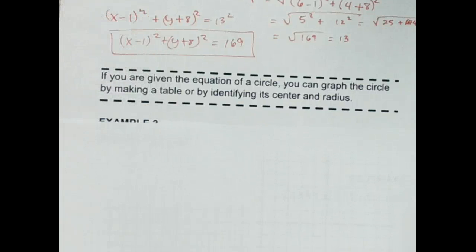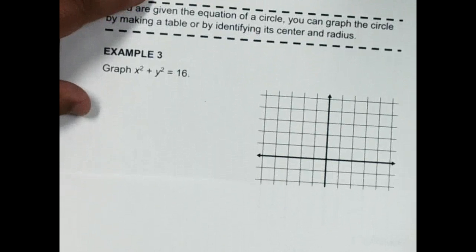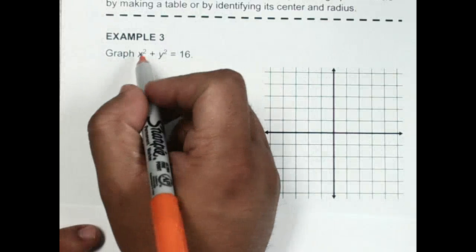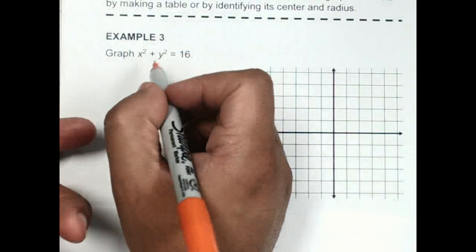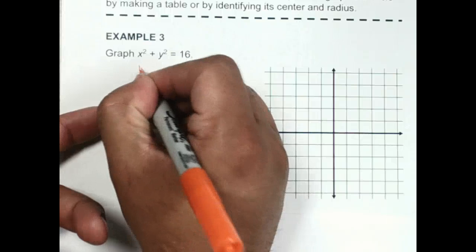Now, if you're given the equation of a circle, you can graph the circle by making a table or by identifying its center and radius. Okay, so let's do that on this Example 3. I notice here that I just have x² + y² = 16. What's missing?